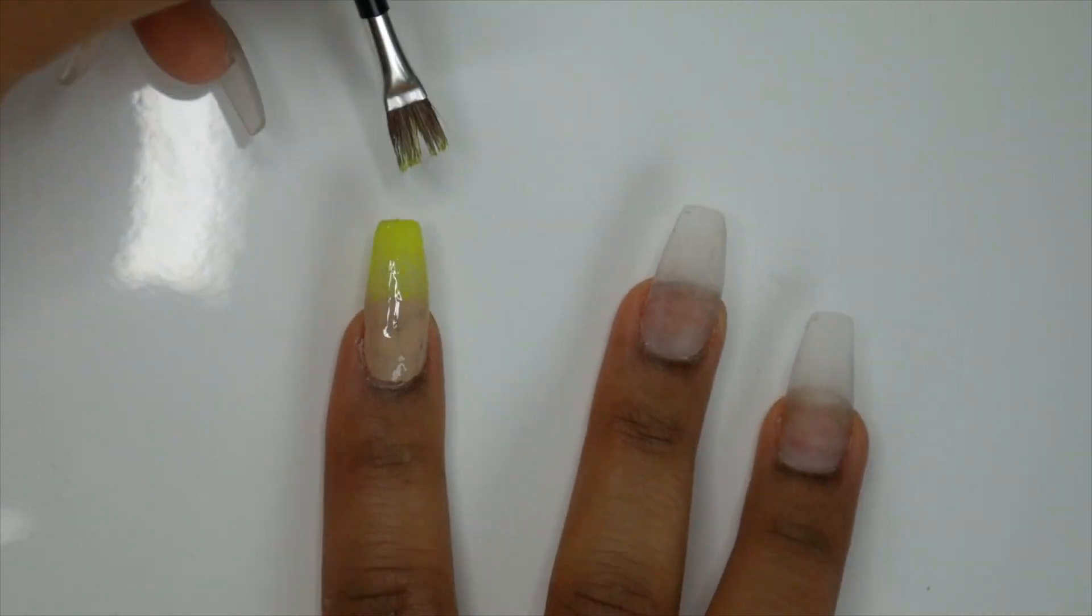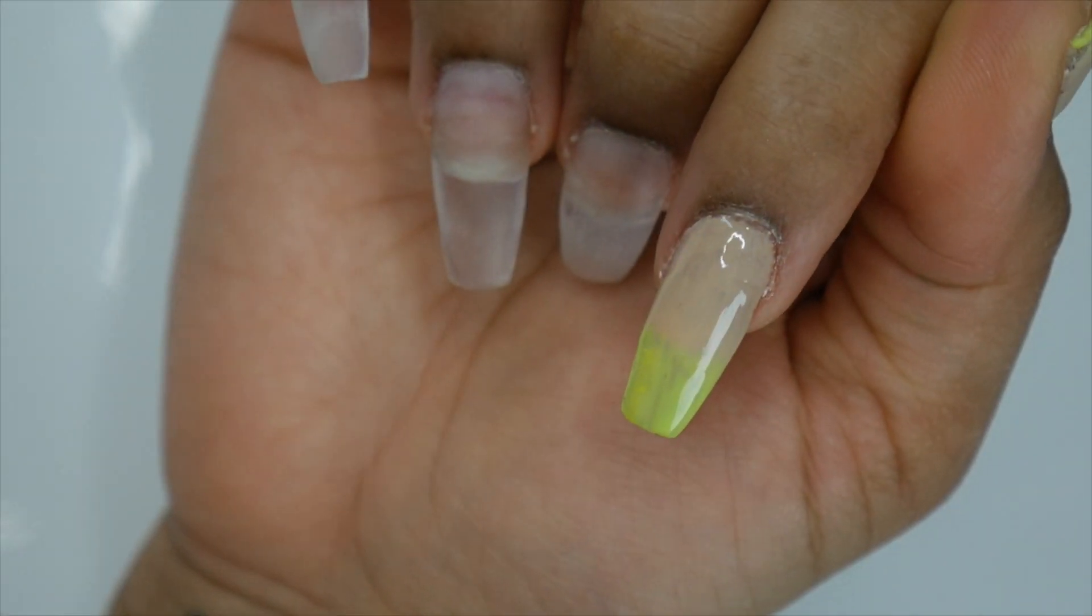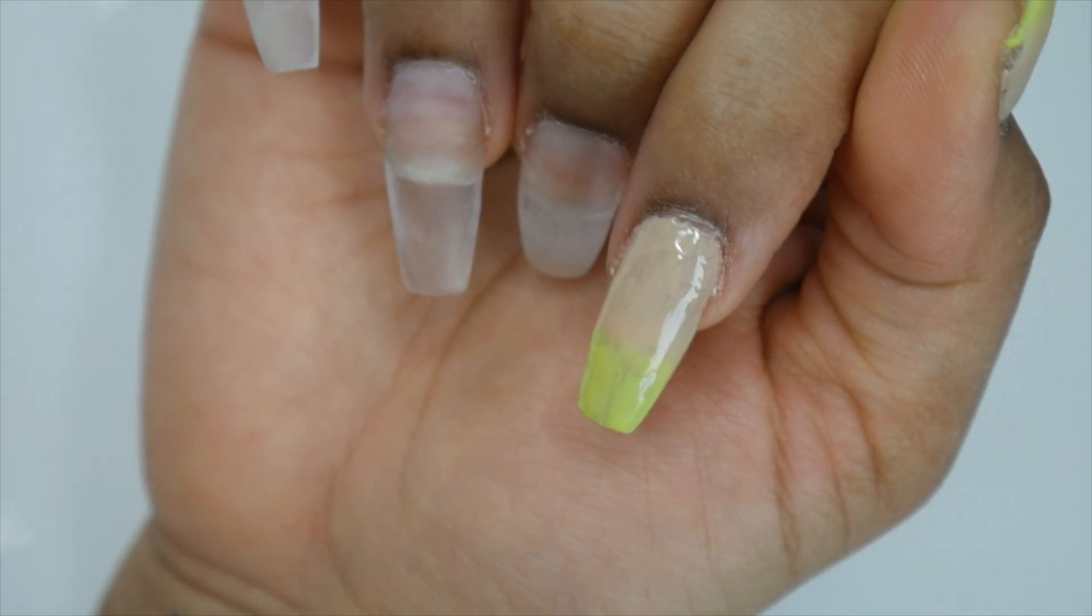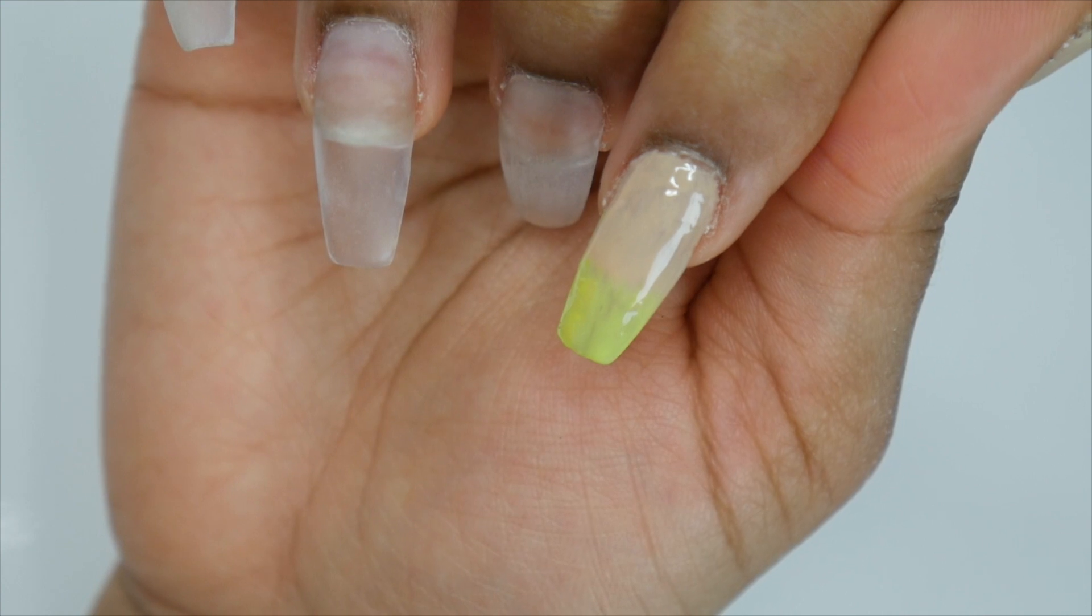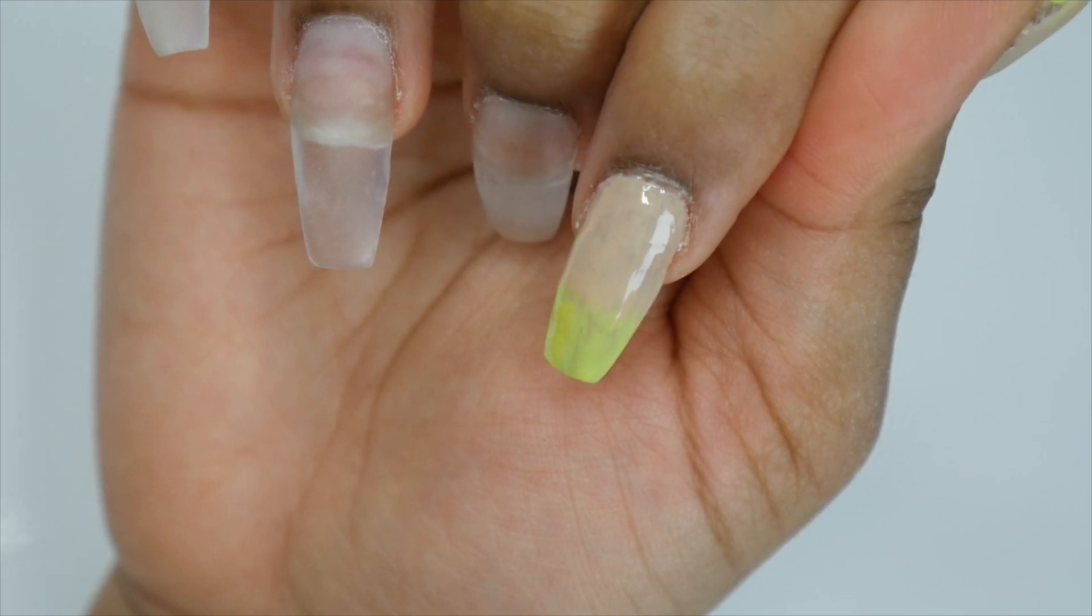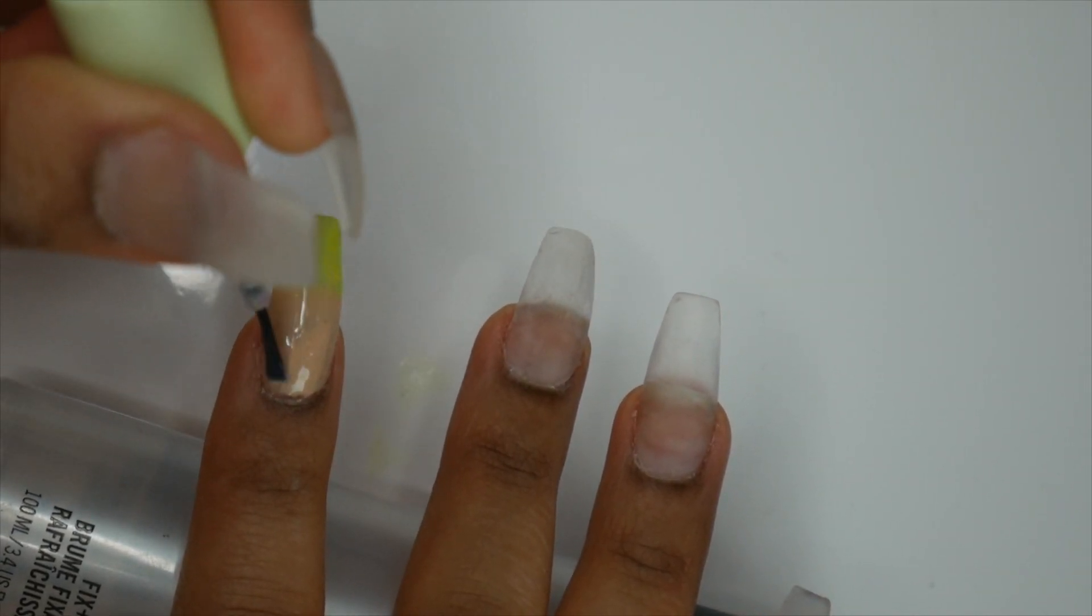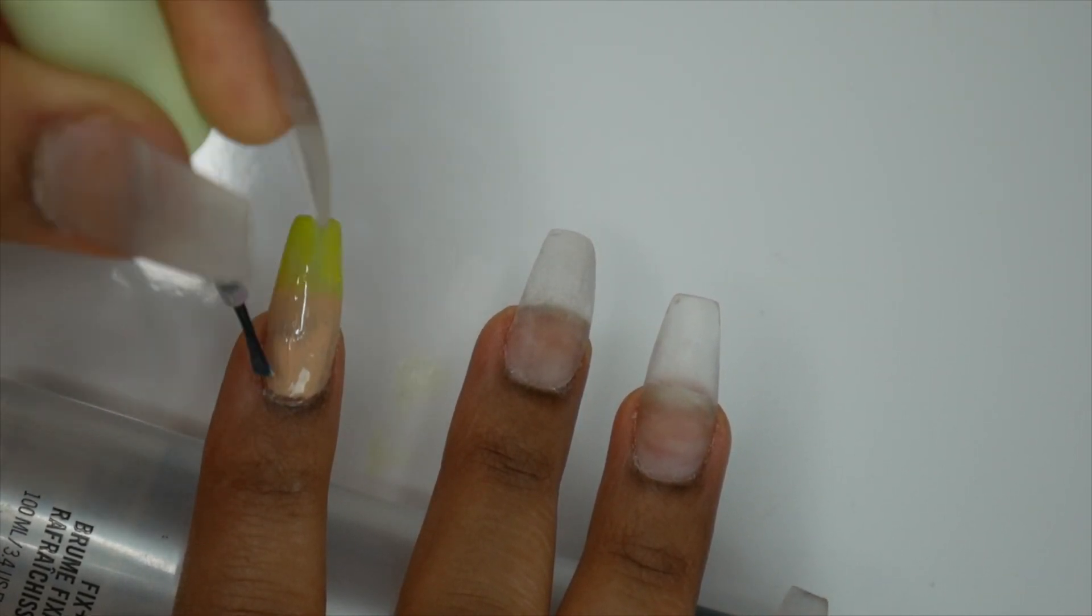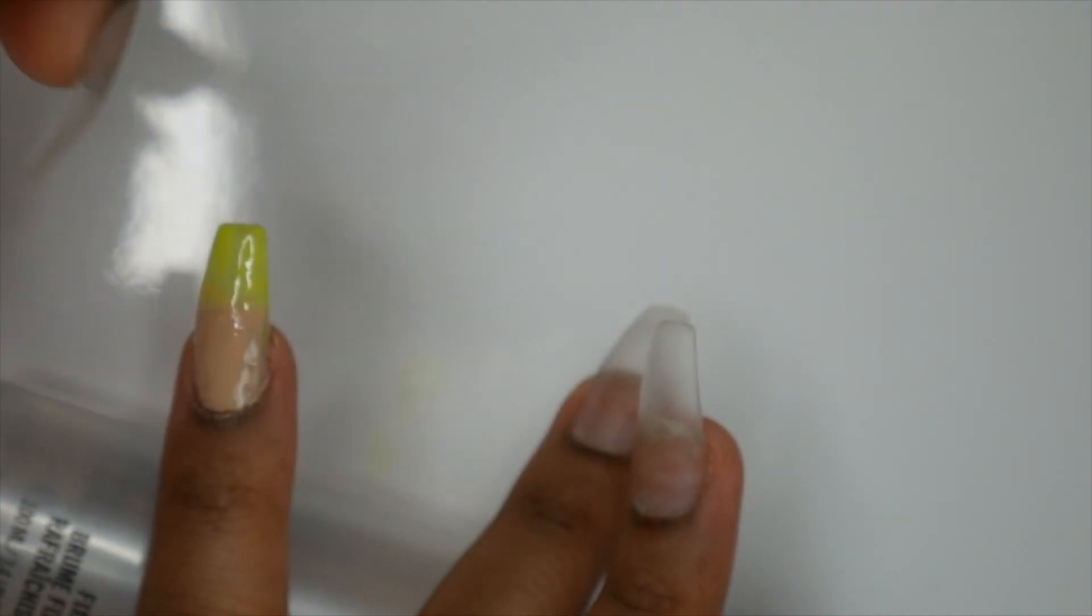So basically you're just going to keep doing that and then it should look something like this. Once you get the color and blending that you want, you're going to cure it in the lamp and then go back for a second layer of both colors. That's what I'm doing right here—a second layer of both colors, blending them together, then curing it in the lamp and applying a top coat.